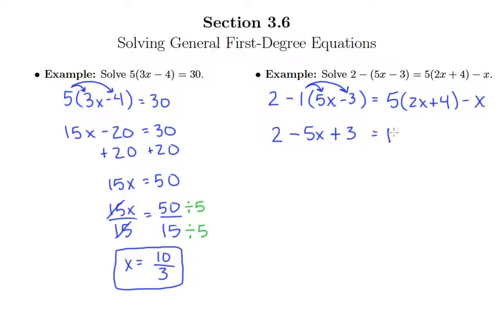5 times 2x is 10x, and then 5 times 4 is of course 20. Don't forget about our minus x out there.